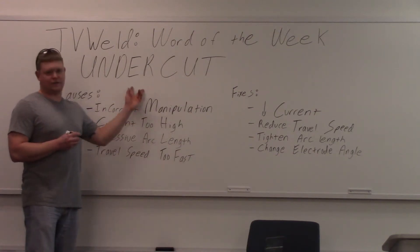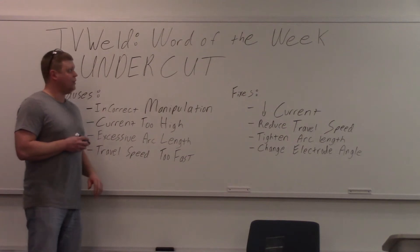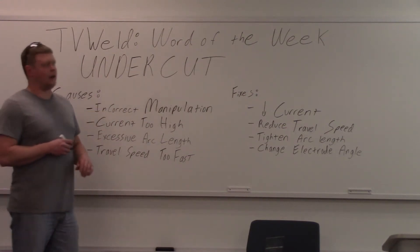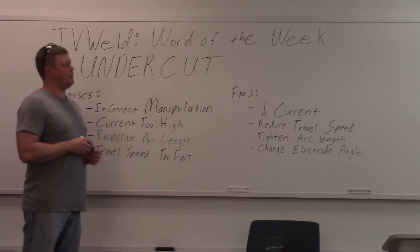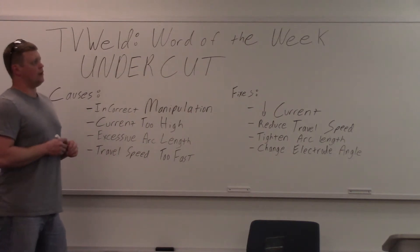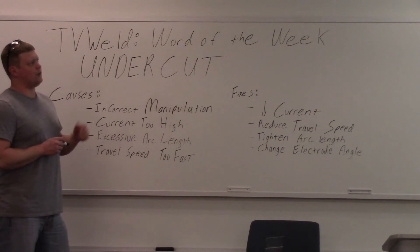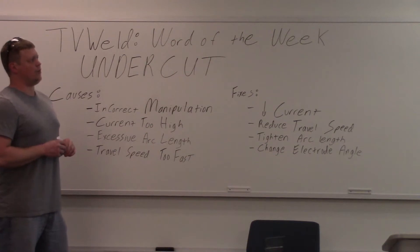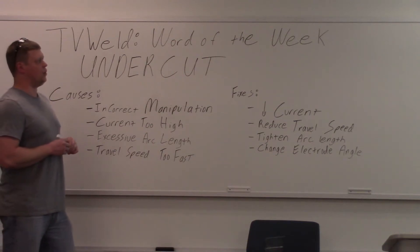If you don't know what undercut is and somebody asks you, you're going to look like a fool. The definition for undercutting is a groove or crater that occurs near the toe of the weld. When this weld flaw occurs, the weld metal fails to fill the groove area, resulting in a weak weld that is prone to cracking along the toes.